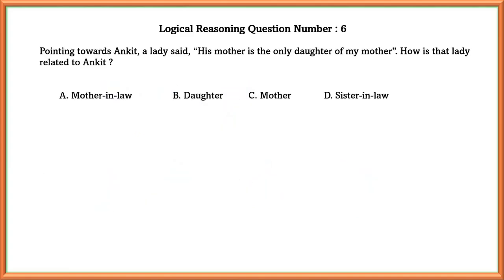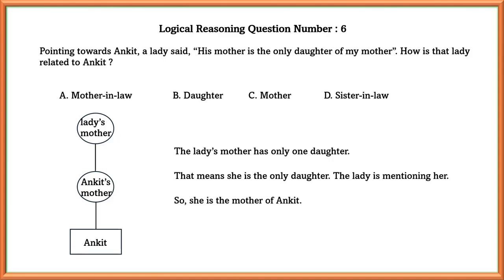Logical reasoning question number 6. Pointing towards Ankith, a lady says, his mother is the only daughter of my mother. How is that lady related to Ankith? The lady's mother has only one daughter. That means she is the only daughter. The lady is mentioning herself. So she is the mother of Ankith.